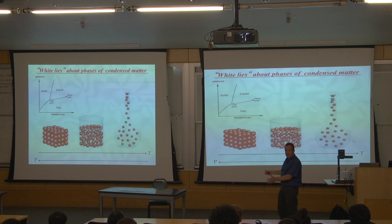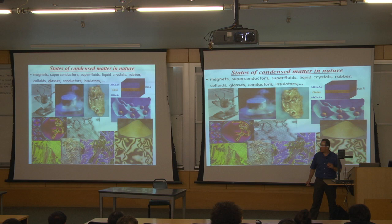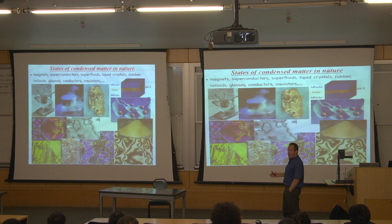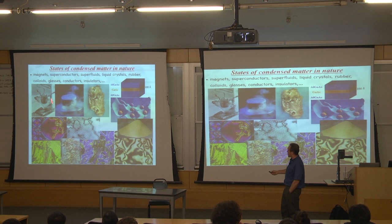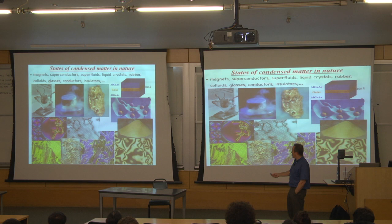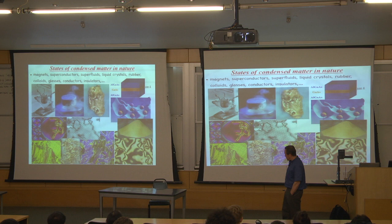In reality, if you're a condensed matter physicist, the world really looks much richer than that. There's a breathtaking richness of systems — ranging from semiconductors, superconductors, magnetism, quantum Hall effect, liquid crystals, granular materials, rubber, topological defects, and much more. This is just a small cross-section of representative examples of condensed matter physics.